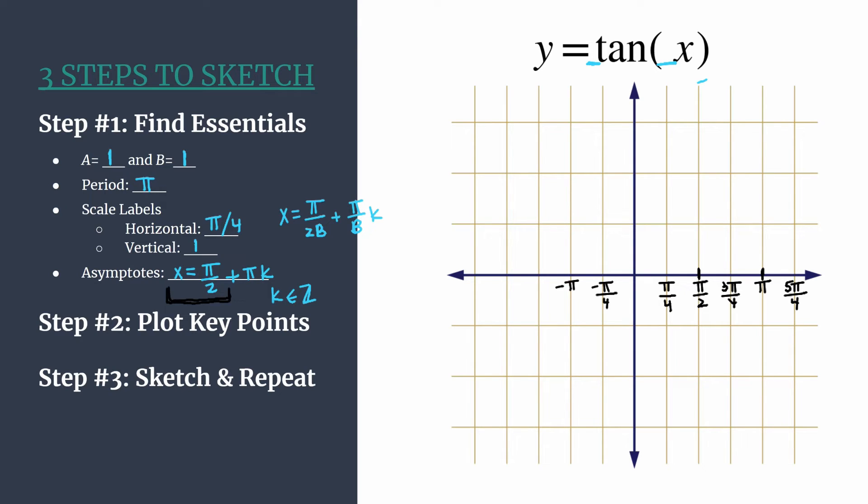So let's label now the negative part of the horizontal axis. It'll be the same labels as on the positive part, but just with negatives. Negative π, negative five π over four. Now let's label our vertical axis, counting by ones. And we are ready to move on to step two.